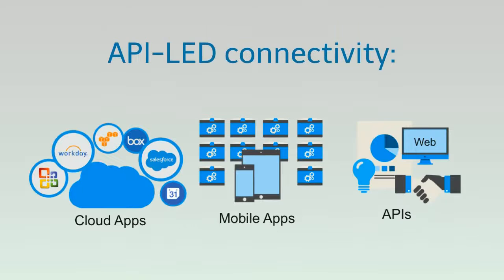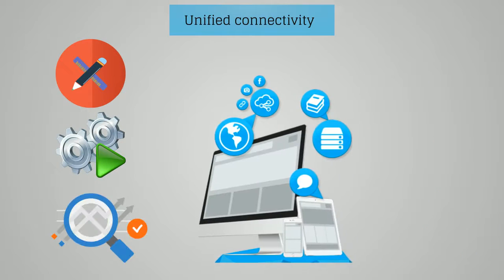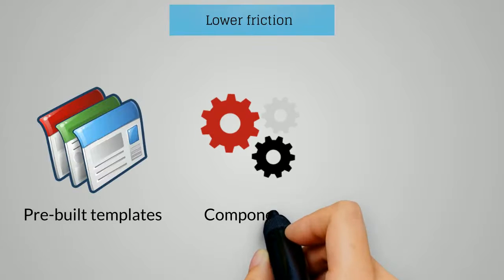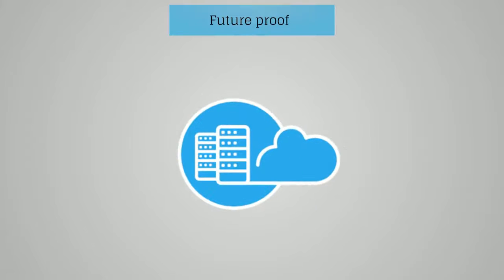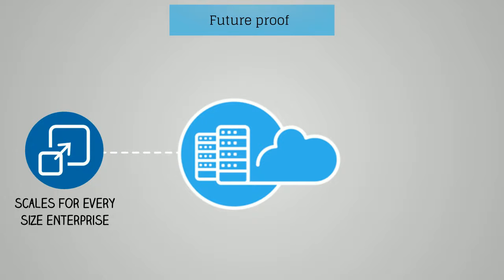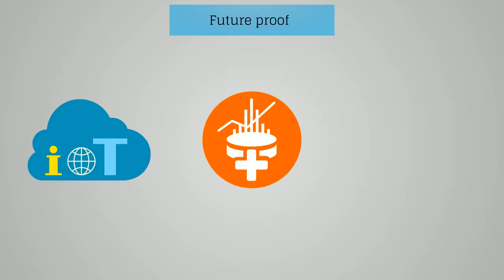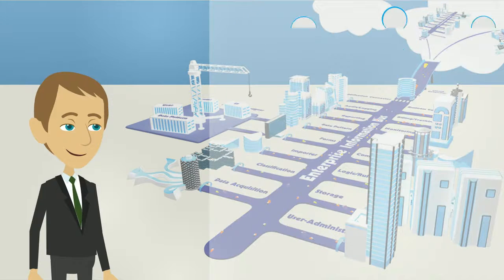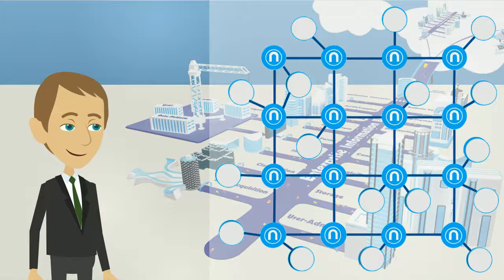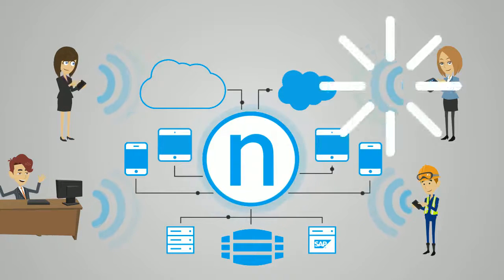API-led connectivity enables unified connectivity — design, run and analyze services and APIs all on a single platform. It offers lower friction with pre-built templates, components and other reusable building blocks. It is future-proof, ready for cloud-first IT that scales for every size enterprise and molds to your company's needs, including moves into IoT, big data or analytic processes. John adopted the Anypoint Platform and finally completed an application network, allowing many people inside and outside the enterprise to have controlled access to valuable business data.